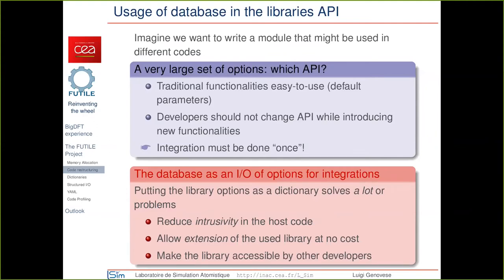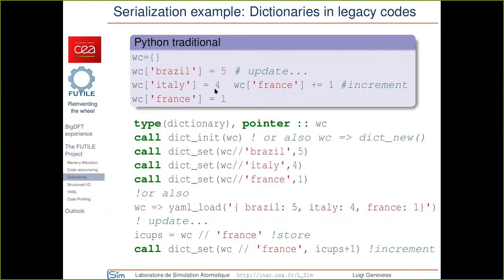In this way, one can develop a library with a well-defined API, and if the dictionary is one of the input parameters of its initialization routines, the intrusivity in the code that employs this library is reduced to a minimum. New versions of the library can be easily generalized and remain backward compatible with respect to previous implementations. I would like to show what the DSL we have implemented means in the context of dictionaries. We have employed a slightly different syntax from the one Nick presented, which is inspired from Python.